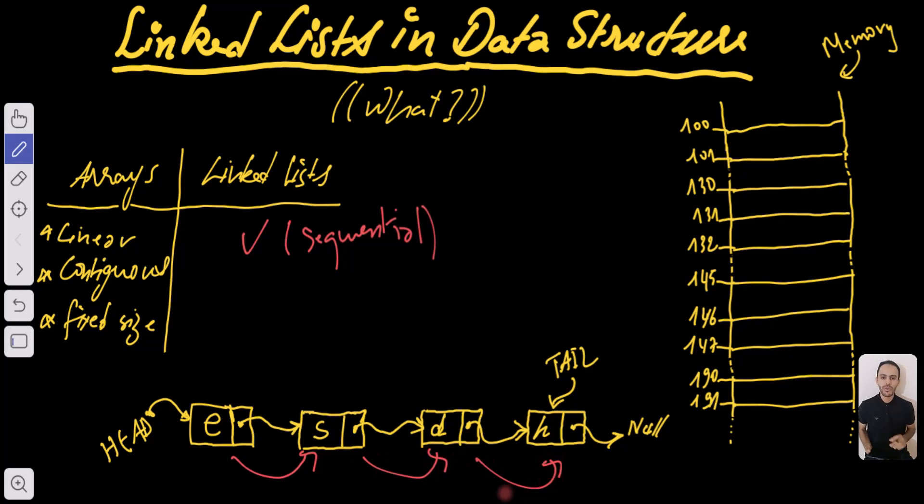The second point that we have mentioned about arrays is that they are contiguous data structures which means that the elements of the array are put in memory in adjacent locations which is not necessarily the case for linked lists. So in linked lists the elements are put in non-contiguous manner.